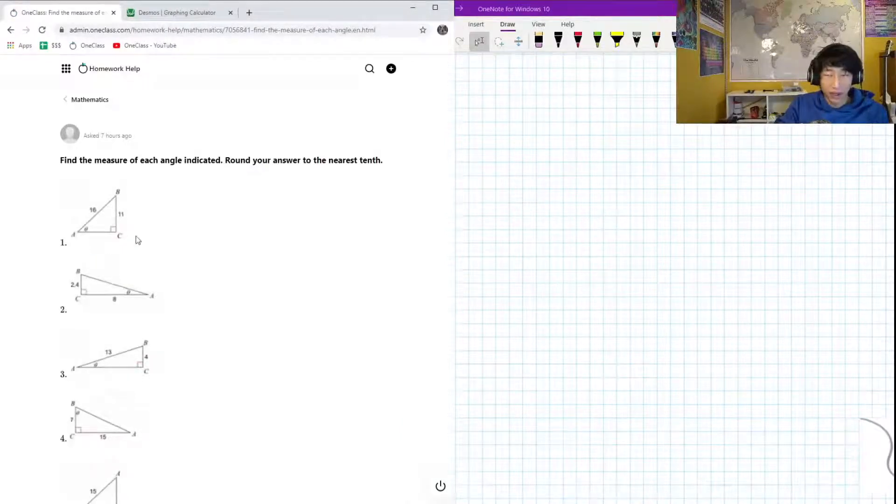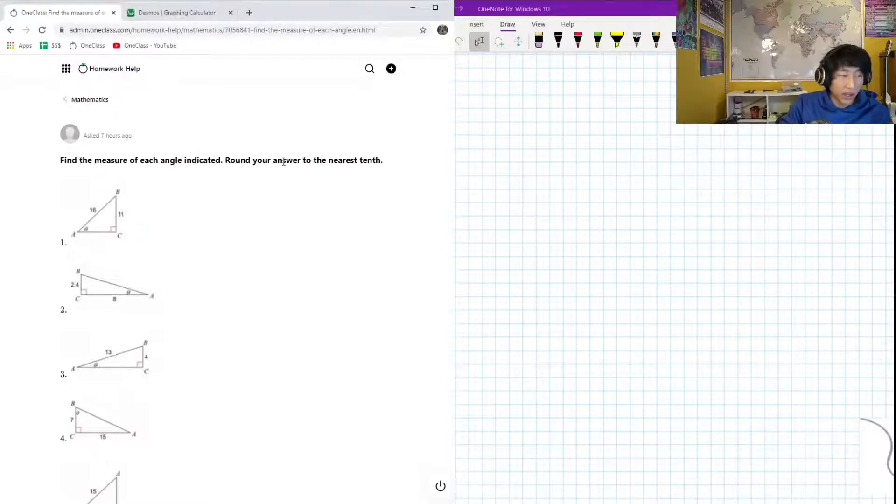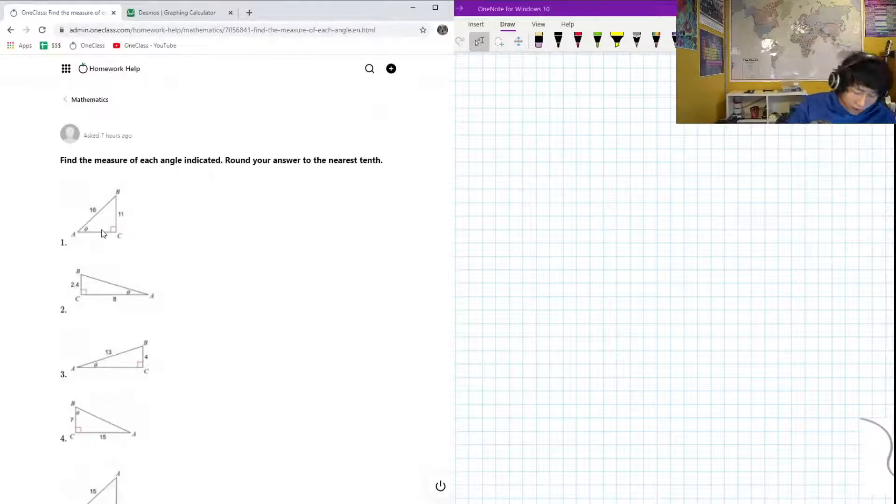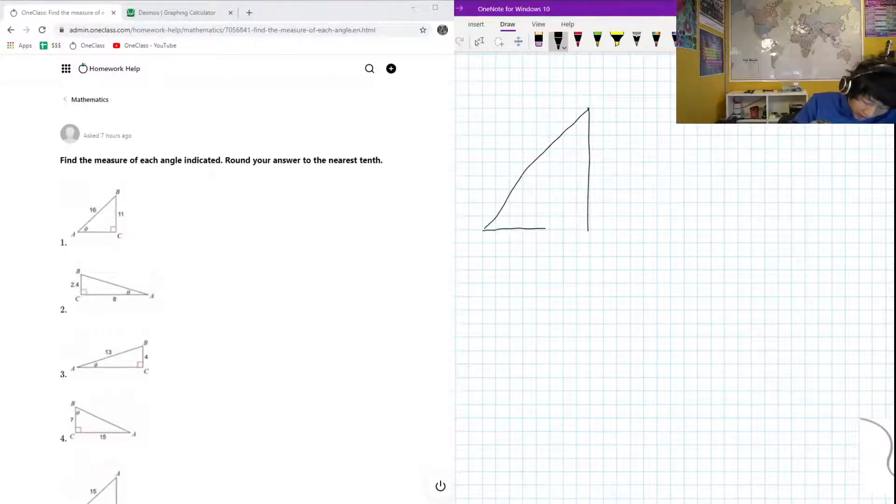Okay, so we have the next question on the menu today. It's asking us to find the measure of each angle indicated, and we have to round our answer to the nearest tenth. Nothing to be worried about. Let's look at our first triangle here - we got a right angle triangle.